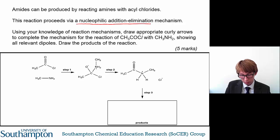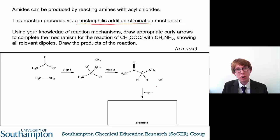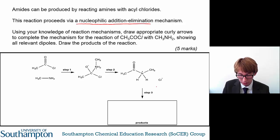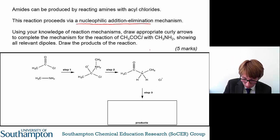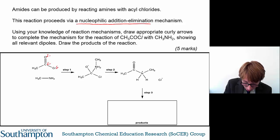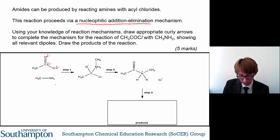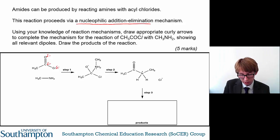You can use the structures given to you to figure out this mechanism. The first part asks you to draw all relevant dipoles. So we put delta minus on the oxygen, delta plus on the carbon, and delta minus on the chlorine. This is because chlorine and oxygen are more electronegative than the carbon, so the carbon is more electron deficient and slightly positive, whereas the chlorine and oxygen are slightly more electron rich.